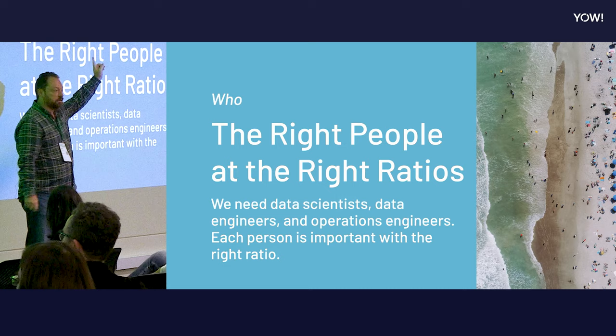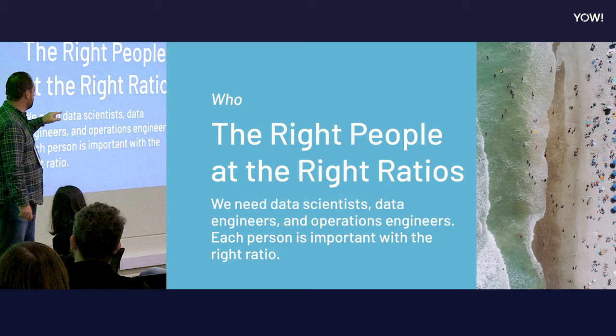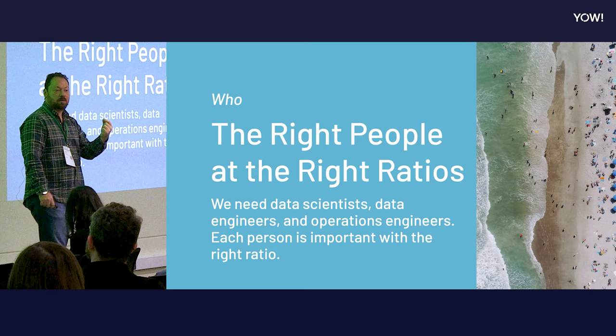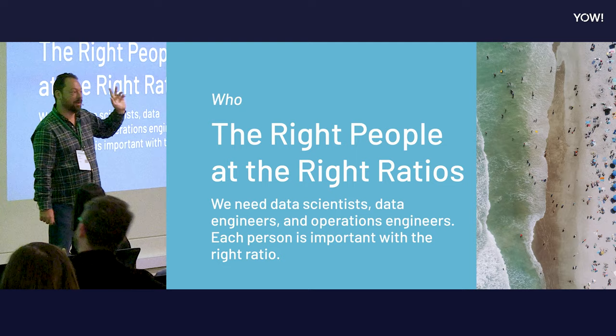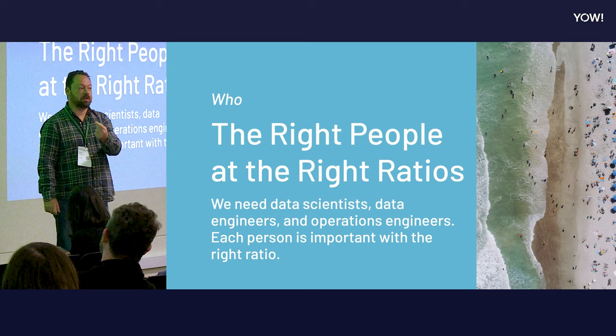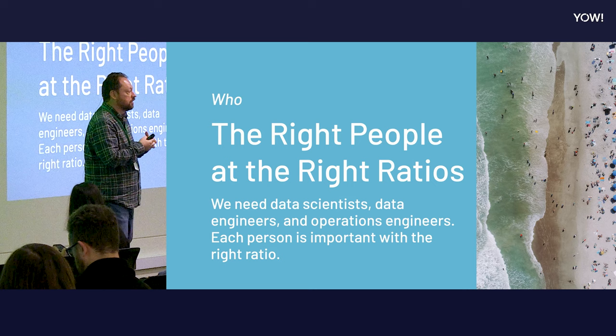Who — do we have the right setup for our team? There's a ratio to this. How many of you are on a team with lots of data scientists and zero data engineers? That's a really common one. You know what that looks like? It looks like failure. Data scientists don't have the skills to do engineering properly — they may have learned enough coding to get by, but they are not the people who do engineering.